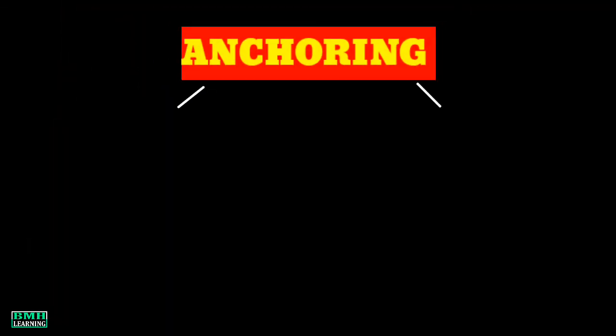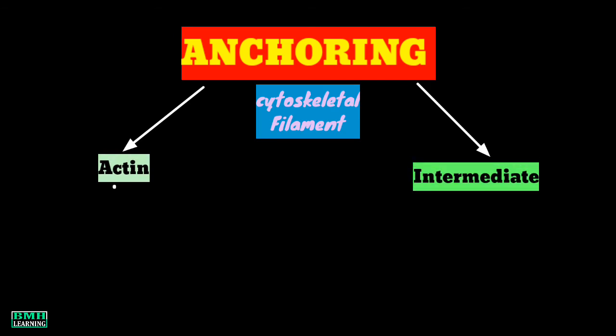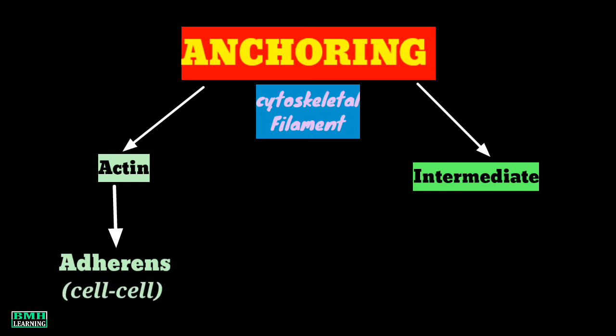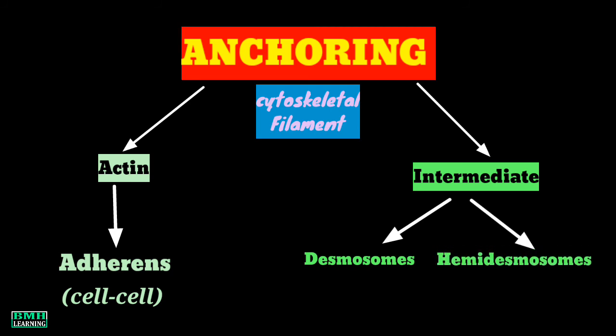Anchoring junctions are further categorized into two types depending upon the type of cytoskeletal anchor protein they have. The junctions can possess either actin filaments or intermediate filaments. Junctions which contain actin filaments are called adherent junctions, and these are present between two cells. On the other hand, anchoring junctions having intermediate filaments are further divided into two categories: desmosomes and hemidesmosomes.